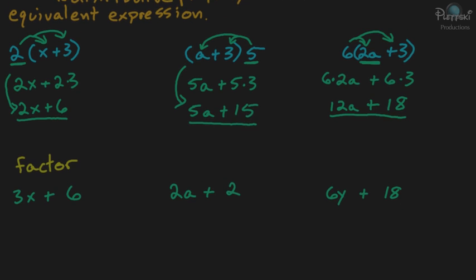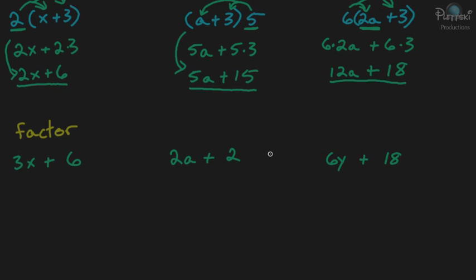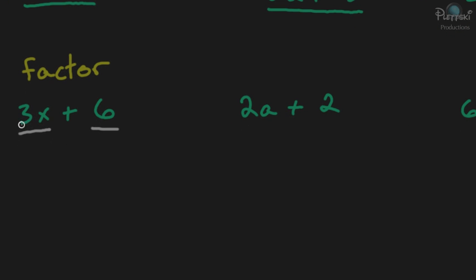Now let's skip down to factoring. This is actually the opposite process of the distributive property. Instead of multiplying things out, we're actually going to be dividing — looking for something that's in common with each term to factor out. In this case we have 3x, and the factors of 3x are just 3 and x. The factors of 6 are 3 and 2. So what they have in common is the 3, and we can factor a 3 out of each term.